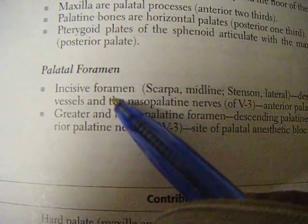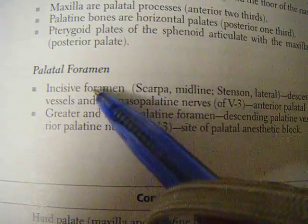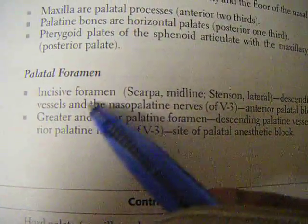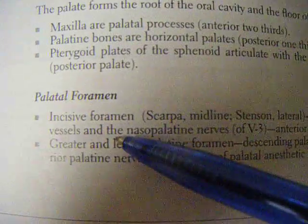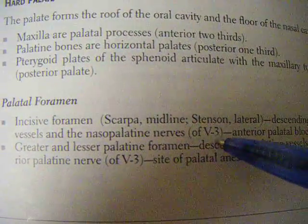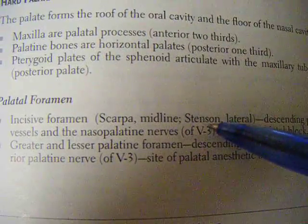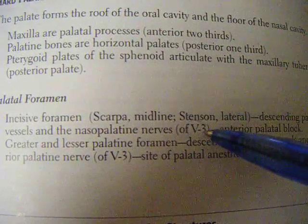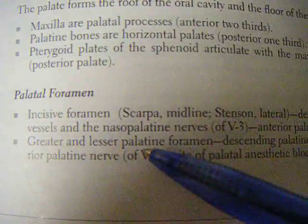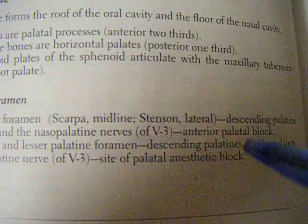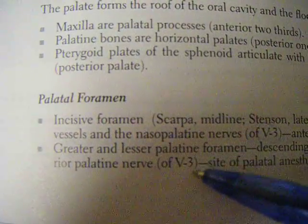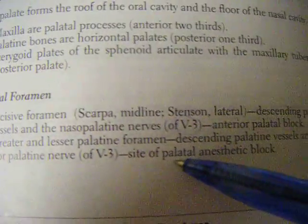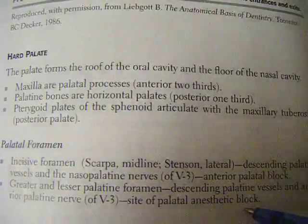The palatine foramina include the incisive foramen and the greater and lesser palatine foramina. Through the incisive foramen pass the descending palatine vessels and the nasopalatine nerves, which are divisions of the mandibular division of the trigeminal nerve (V3). Through the greater and lesser palatine foramina pass the descending palatine vessels and the anterior palatine nerve, also a division of the mandibular trigeminal nerve. This is a site for the palatal anesthetic block.